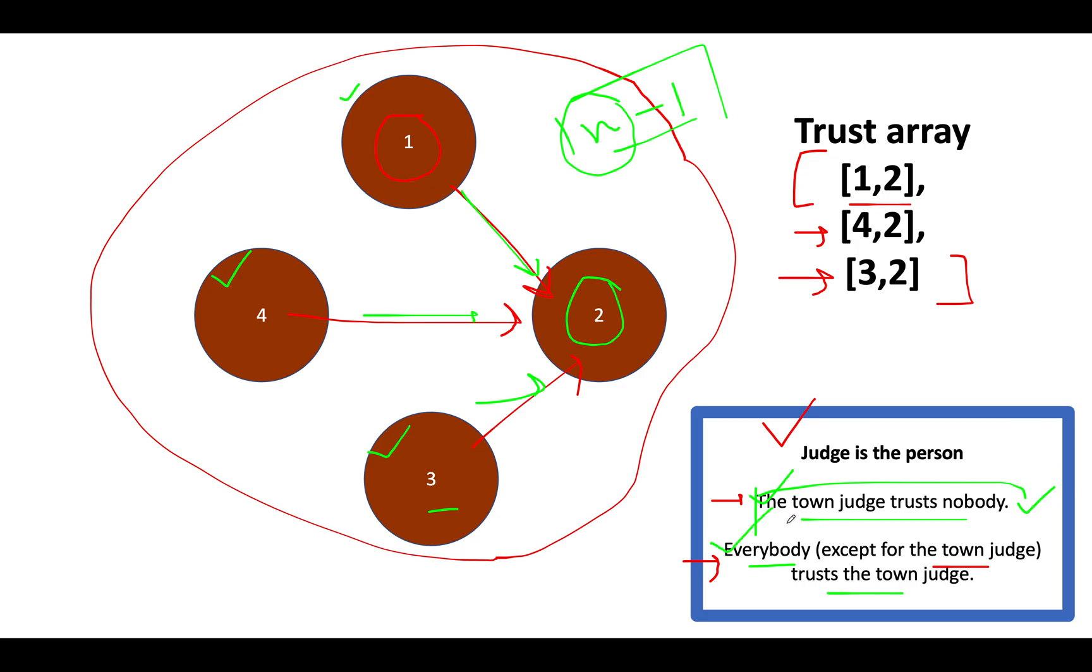And how can we graphically state the first condition? There should be no outgoing edges from second node. This maps to there should be no outgoing edges, no outgoing edges should be 0. And this maps to incoming edges count. Incoming count should be equal to n minus 1. If these two conditions are met, then we can simply say that the current node is acting as the town judge. Also, in order to simplify, I took a very simple array. There could be more cases where we have more edges. But this is the crux of the problem. These two conditions should be satisfied in order to identify the judge appropriately.